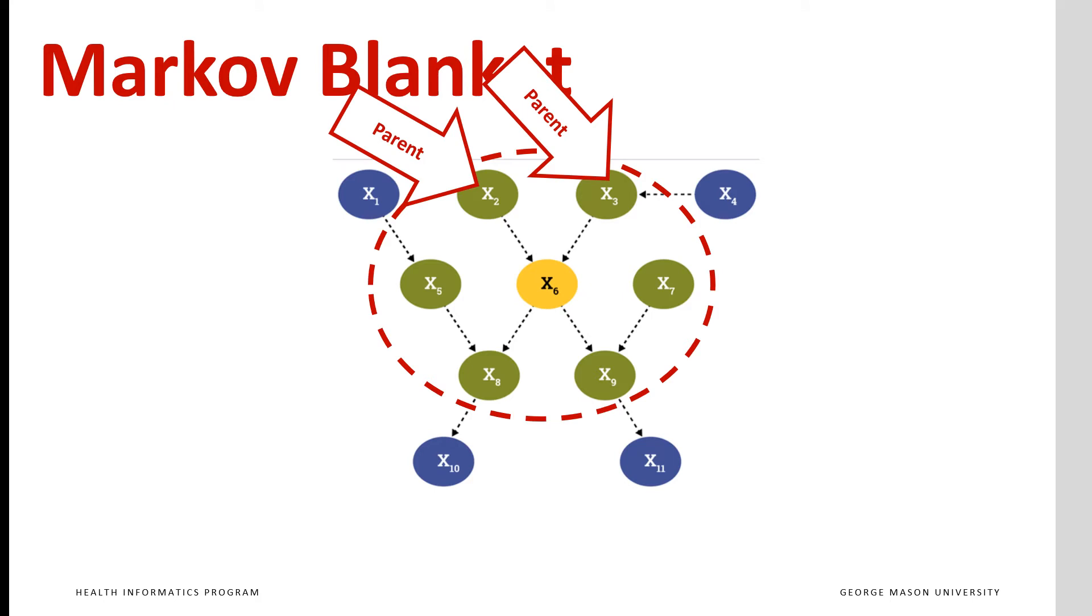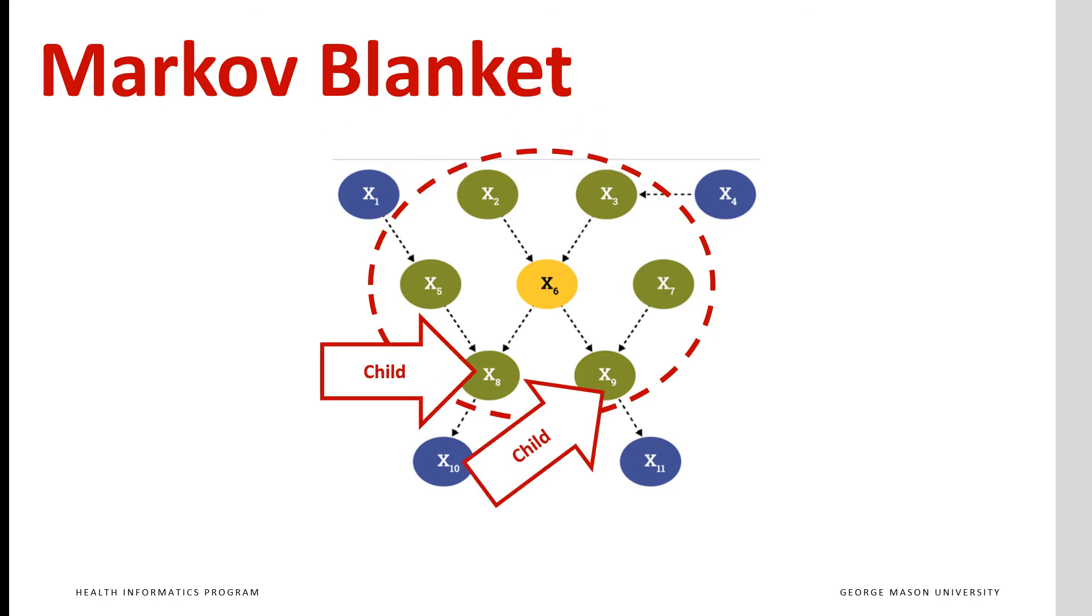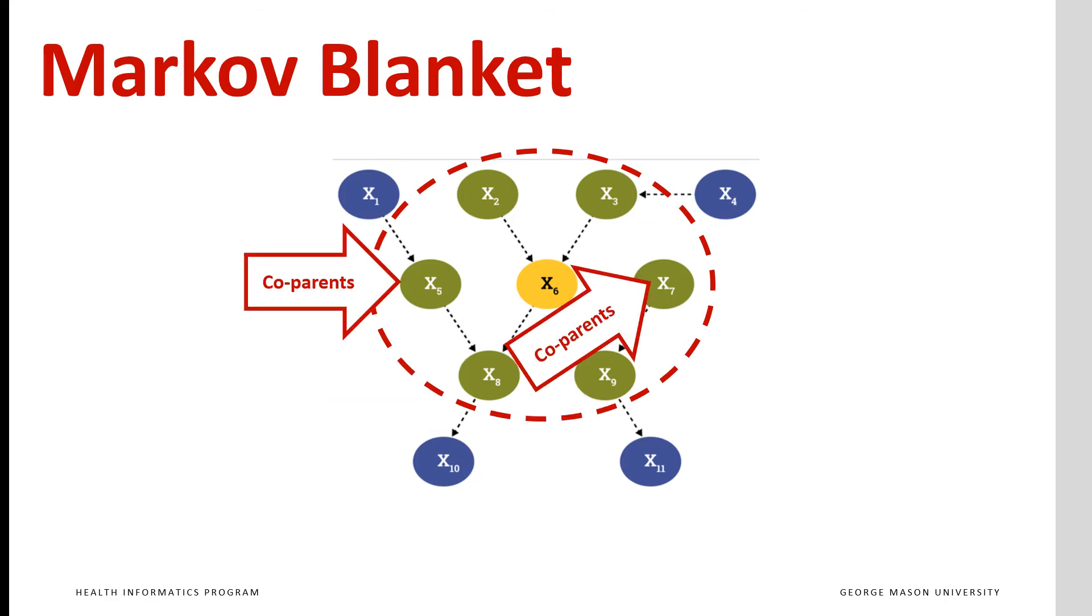The Markov blanket includes parents of x6, which are x2 and x3, the variables that immediately precede x6 and are connected to it. Markov blanket also includes children of x6, in this case x8 and x9.